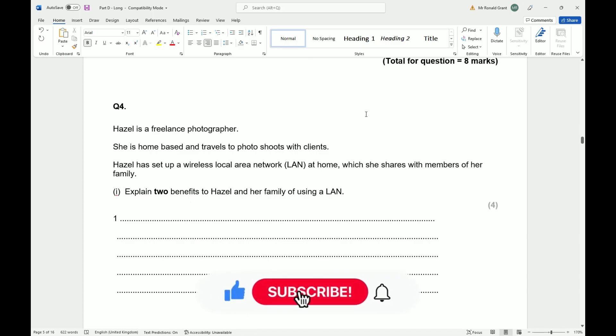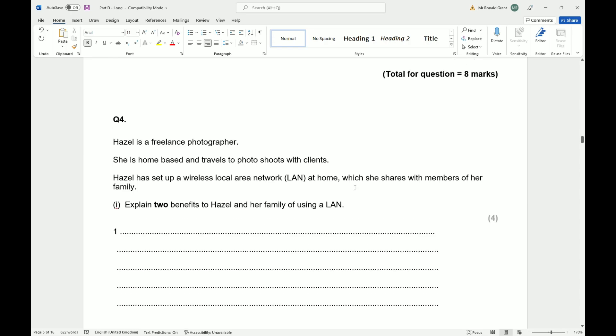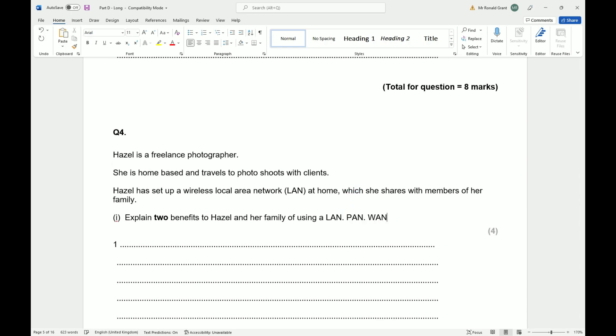Question number four, part D, long answer questions. Hazel is a freelance photographer. She is home-based and travels to photo shoots with clients. Hazel has set up a wireless local area network (LAN) at home which she uses with members of her family. Explain two benefits to Hazel and her family of using a LAN. Remember, a LAN is a Local Area Network, versus PAN (Private Area Network) and WAN (Wide Area Network).